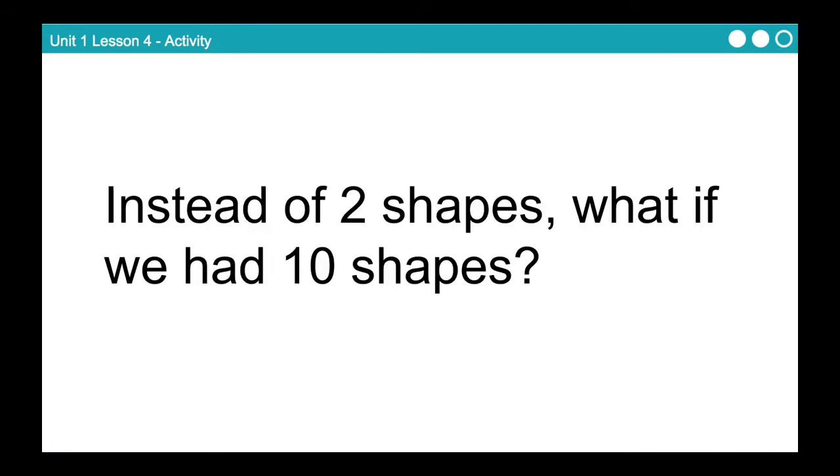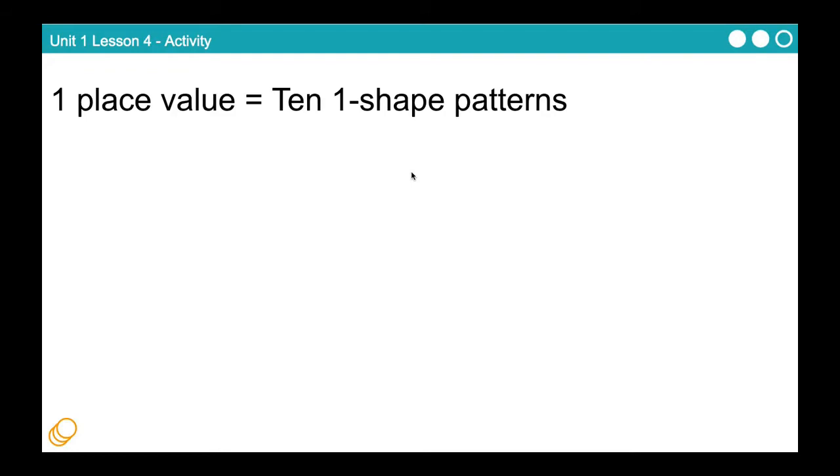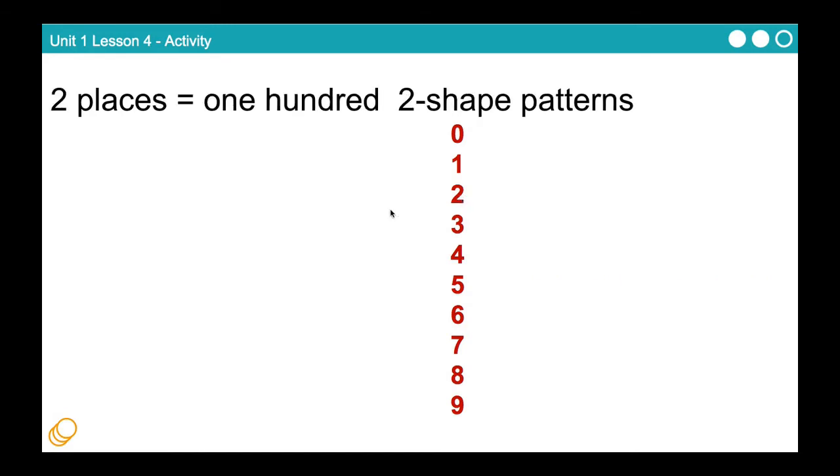Now, here's the question. Instead of two shapes, instead of circle and square, what if we had ten shapes? What would that look like? If you have one place value and you have ten different shapes, you would have ten one-shape patterns. Notice how this is just like the circle square. So what would those ten one-shape patterns be? There they are. Now, think of these as shapes. If you really think about it, that's all these are. That's a different shape from that. Really think about kind of abstractly about numbers here, and realize that they really are just shapes that we have put data into. So this shape represents two, the concept of two.